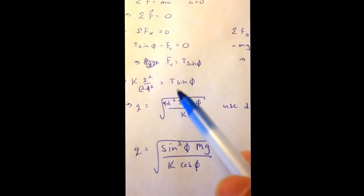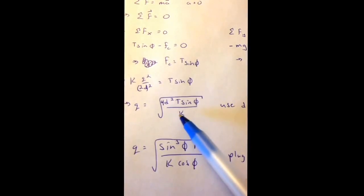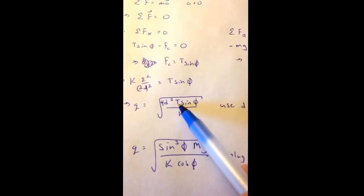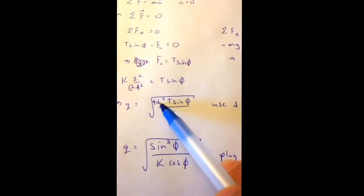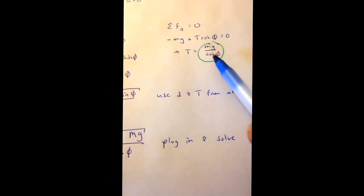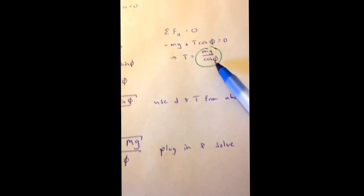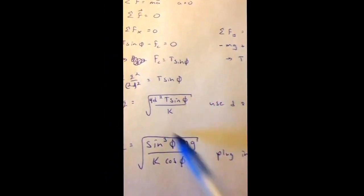So I'm going to have 4d squared times T sine of phi all over k. So at this point, I need to do some more substitutions, because notice I don't really know what T is. I don't really know what D is, but I've solved for those quantities over here. I solved for T right here, mg over cosine phi. I solved for D up here, sine of phi. So I'm going to plug all that in here.